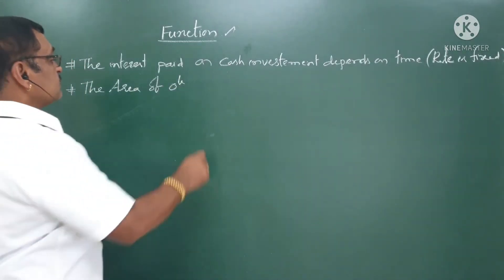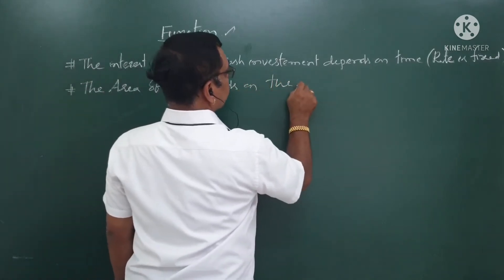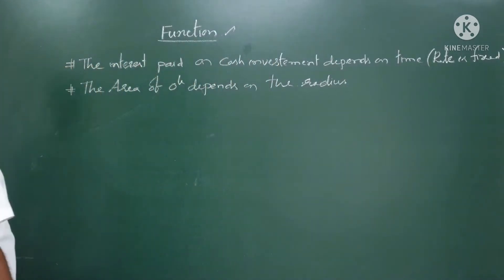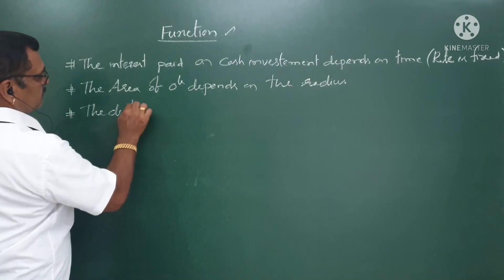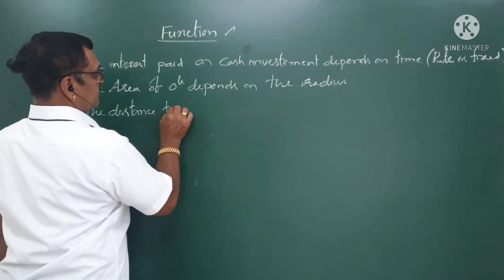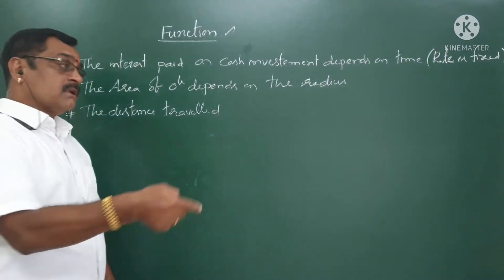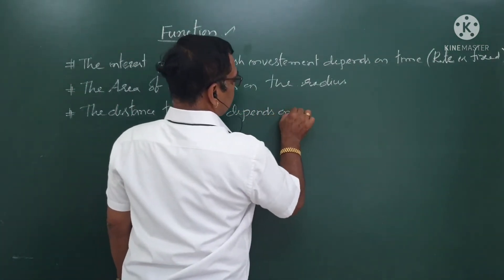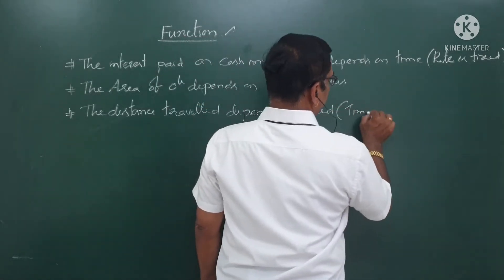The area of the circle, of course, depends on the radius. And one more example: the distance of travel. The distance of travel depends on speed or time — I will take speed this time. So the distance of travel depends on speed, with time fixed.